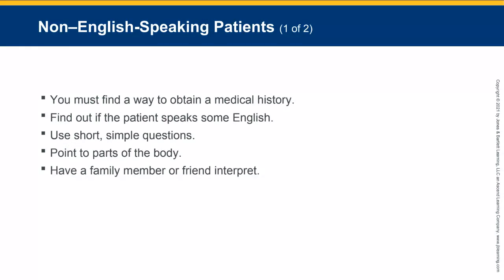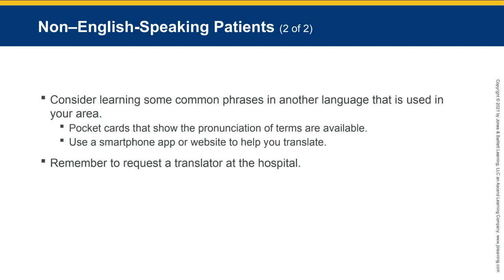Non-English speaking patients: you must find a way to obtain a medical history — it might not be possible in all cases, but definitely try. Find out if the patient speaks some English. Use short, simple questions. Point to parts of the body. Have a family member or friend interpret. If you're not able to get information, focus on your ABCs. Consider learning some common phrases in another language used in your area. Pocket cards showing pronunciation of terms are available. Use a smartphone app or website to help translate. Remember to request a translator at the hospital.